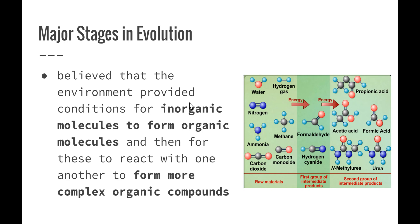It is believed that the environment on early Earth provided the conditions for inorganic molecules to form organic molecules, and then for these organic molecules to react with one another to form more complex organic compounds. We saw that in the video we watched on the Urey and Miller investigation, that we started off with raw materials made up of inorganic compounds. The intermediate products were basic organic compounds, and then over time, these were able to become more advanced organic compounds.